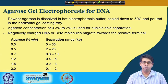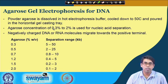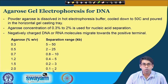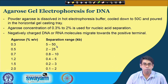The typical concentrations of agarose are in the range of 0.3 percent to 2 percent. Higher percentage gels are used for smaller nucleic acids and lower percentage gels for larger nucleic acids. For example, 2 percent agarose gel is used to separate DNA in the range of 100 to 2000 base pairs, whereas 0.3 percent agarose gel is used to separate DNA in the range of 5000 to 50000 base pairs.